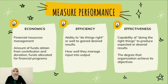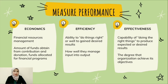The third criteria is effectiveness, defined as the capability of doing the right things to produce expected or desired results. This can be measured by the degree to which the organization achieves its objectives, and the assurance that organization activities support the organization's function, mission, and objectives.